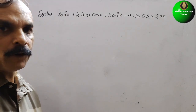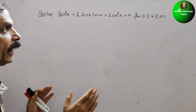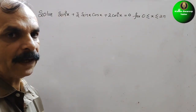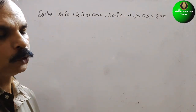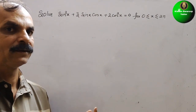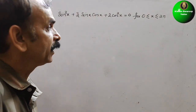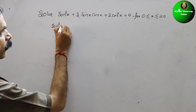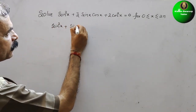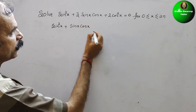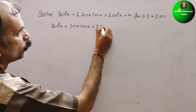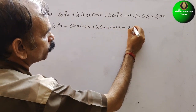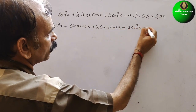Now, what we have to do is split the middle term. Since 1 × 2 = 2, and the factors of 2 are 1 and 2 only, and 2 + 1 = 3, we rewrite it as sin²x + sinx·cosx + 2sinx·cosx + 2cos²x = 0.